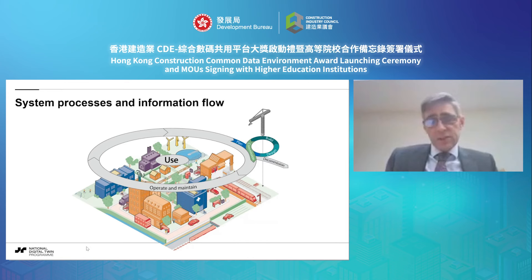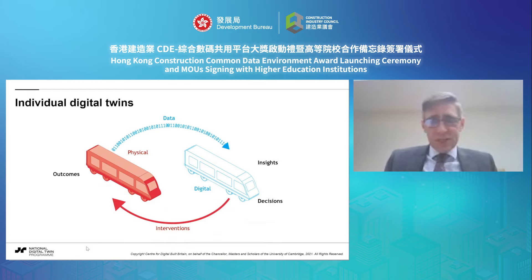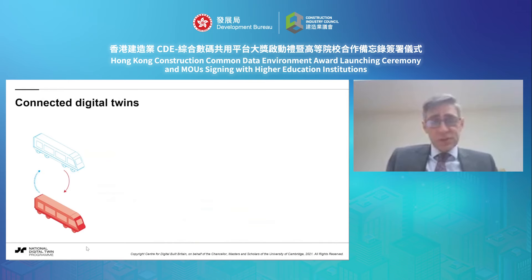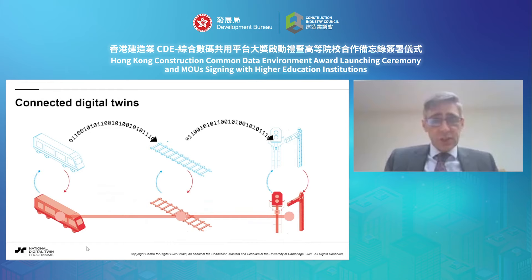To illustrate briefly: an individual digital twin is really about a connection between the digital and physical worlds, where data flows from the physical into the digital. Within the digital world, we generate insights, helping to make better decisions, which then drive interventions back in the physical world — a two-way connection, a cyber-physical system. But if we can imagine one digital twin, we can imagine many: a digital twin of the train, the track, the signalling. In the physical world these are all joined up, and we can imagine them being joined up in the digital world too — that's what we mean by connected digital twins.